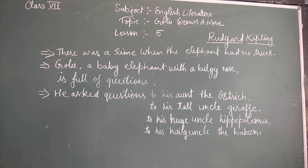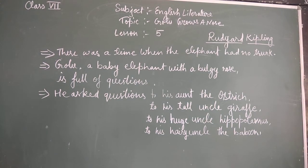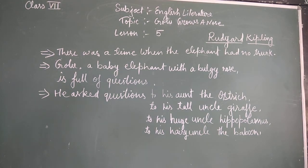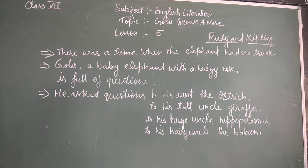The same way he asked his hairy uncle the baboon: why do melons taste like melons? In this way, the ostrich, the giraffe, the hippopotamus, and the baboon had no answers to Golu's questions. For them all, Golu is a naughty baby. They said that he asked such difficult questions that it is very difficult to answer them.